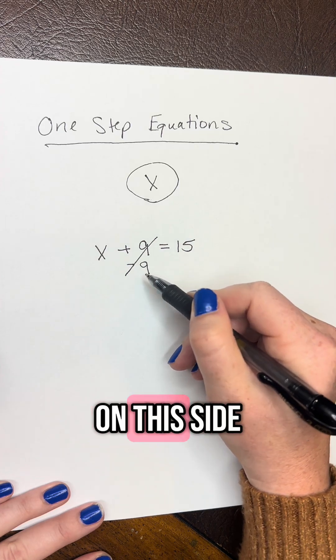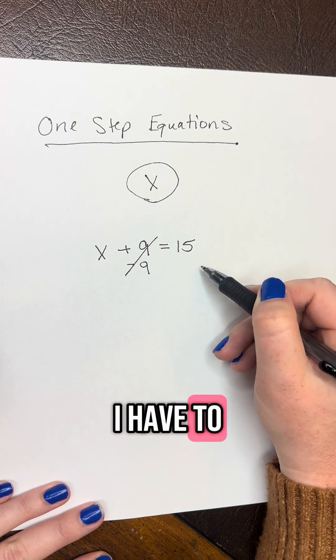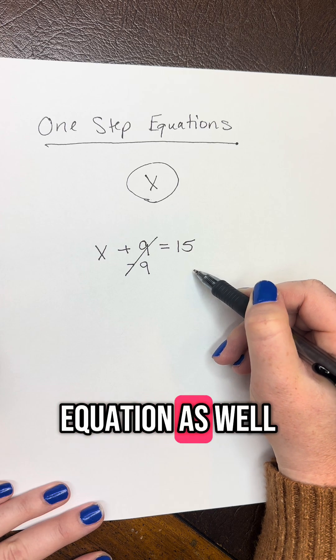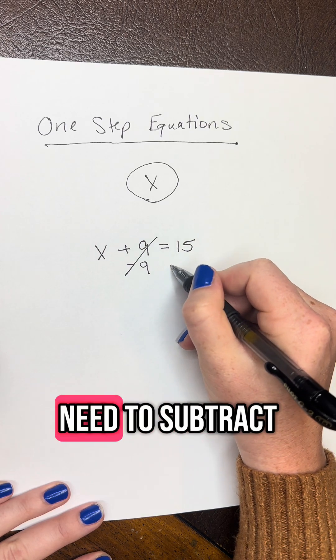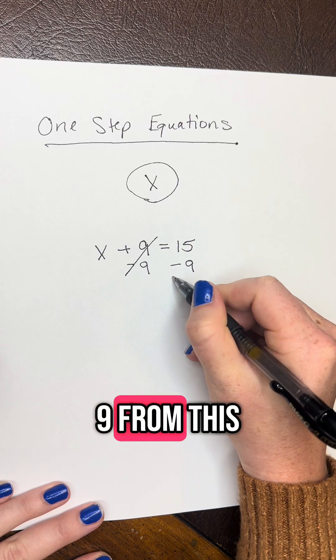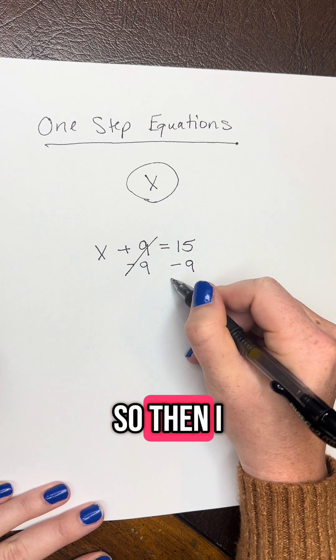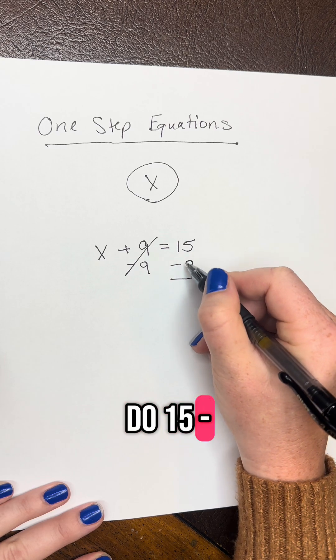Whatever I do on this side of the equation, I have to do on this side of the equation as well. So I also need to subtract 9 from this side of the equation.